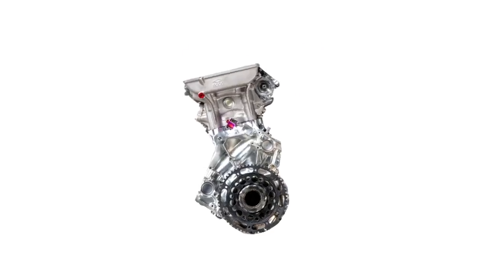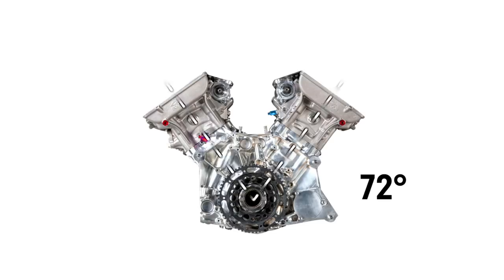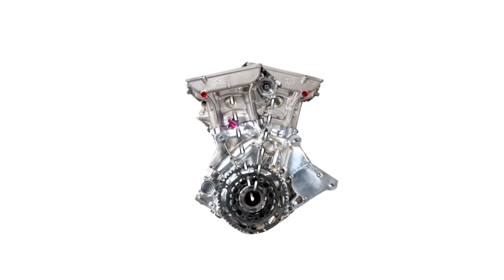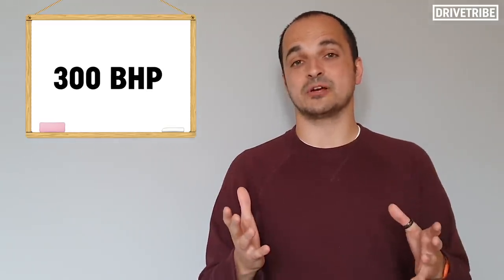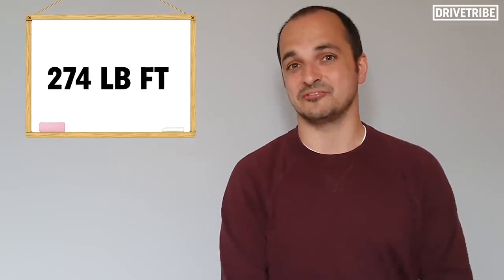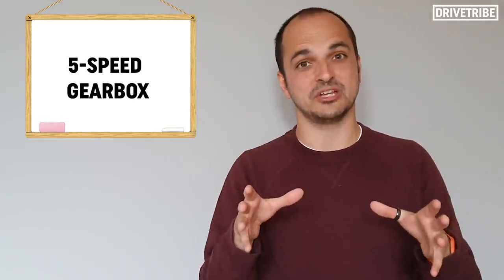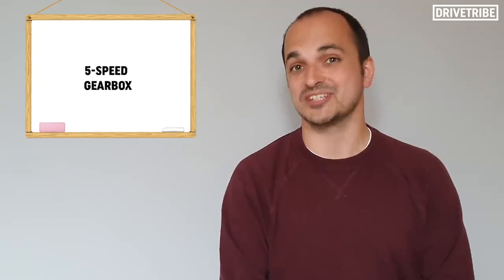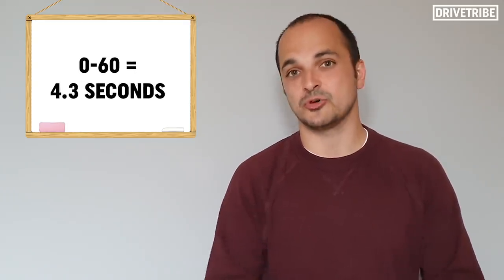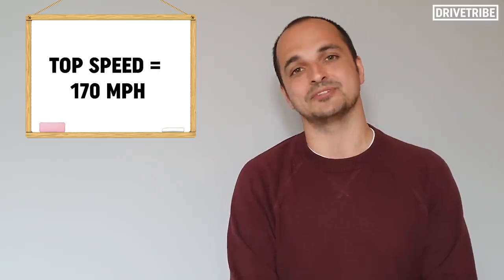Most V10 engines have their banks set at 72 degrees for the best balance. This engine had its banks set at 22.5 degrees, incredibly narrow for a V10. You could see this thing as the first ever V10 engine. It apparently produced 300 brake horsepower and 274 pounds-feet of torque, all fed through a five-speed manual gearbox and would get the car to 60 miles an hour in 4.3 seconds and onto a top speed of 170 miles an hour.